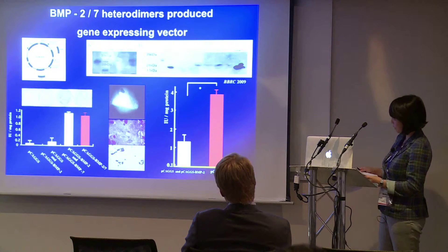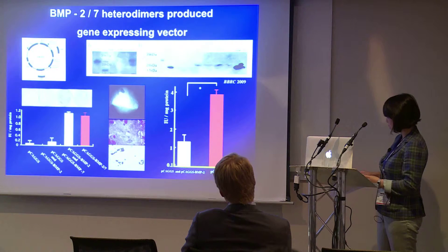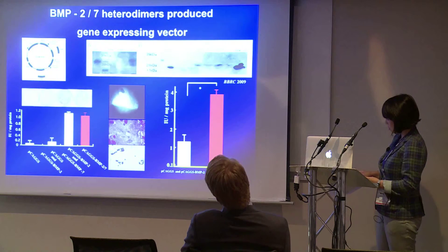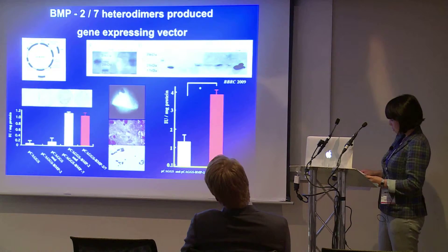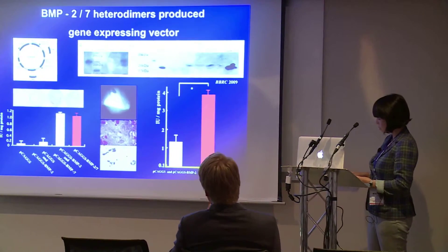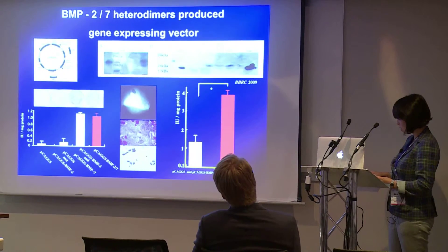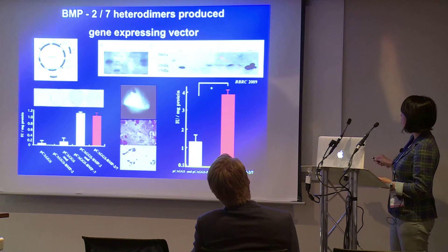For a simpler procedure of gene transfer, we tried to construct a vector that could produce BMP2 and BMP7 heterodimers. Our constructed vector does not have an internal ribosome entry site (IRES), so the vector can express multiple genes equally. We performed immunoprecipitation using supernatant of cells after transfection with the BMP2/7 heterodimer-producing vector.